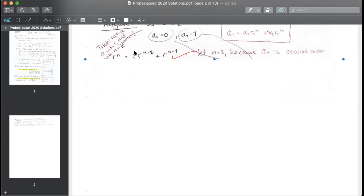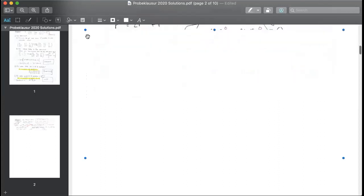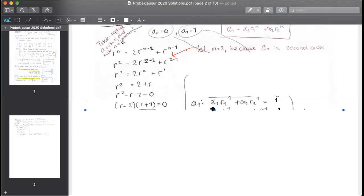And then you let n equal two because an is a second order equation. It makes two recursive calls. So that's what we do. We let n equal two and then we simplify it. You simplify it a little bit further and you get this. Bring all the terms to one side so that it equals zero and you factor it.